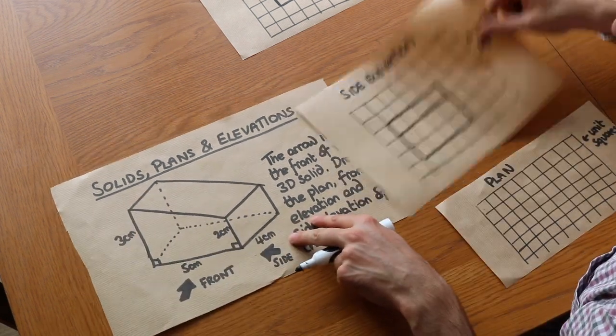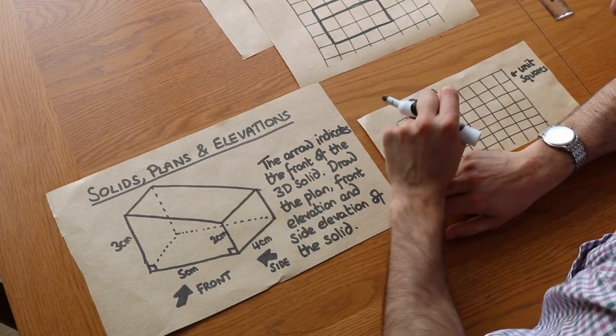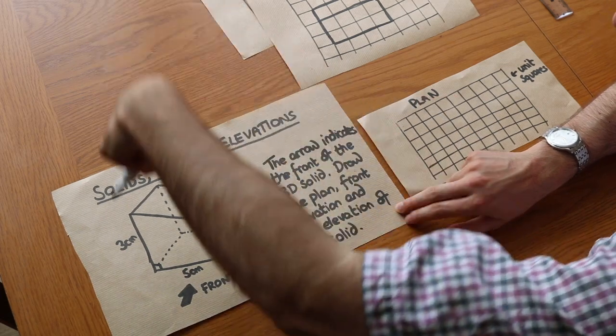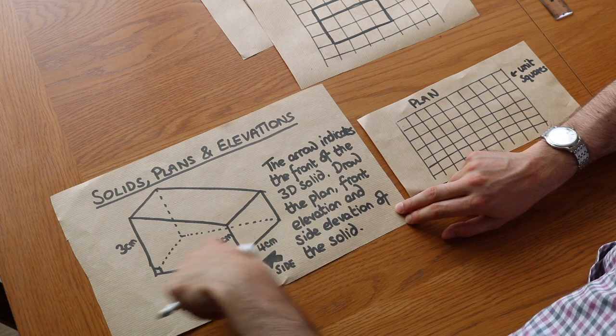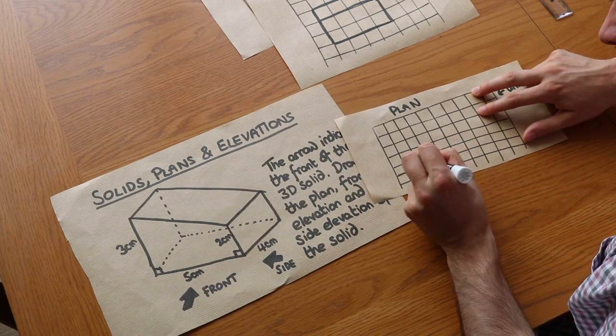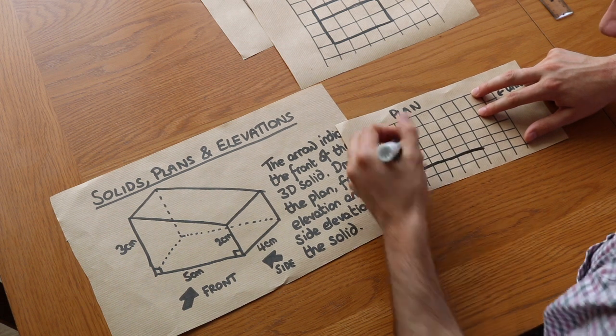And then finally we've got the plan. So the plan is just the view from the top of the shape and that's probably the simplest one. If you're viewing from the top it's going to be four wide and five across like that. So we just need to draw five across and then it's four wide like that.